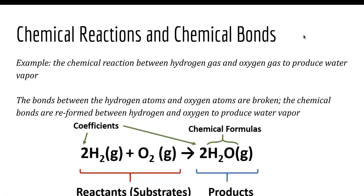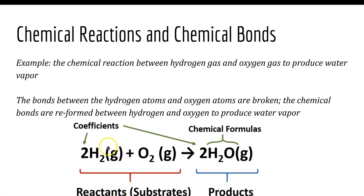For example, a chemical reaction occurs between hydrogen gas and oxygen gas to produce water vapor. The reactants are hydrogen gas and oxygen gas. In order to produce water, the bonds between the hydrogen atoms and oxygen atoms are broken and reformed. Hydrogen gas is two hydrogens bonded together, and oxygen gas is two oxygen atoms bonded together. Those bonds are broken and reformed to produce a new product. The properties of the reactants are very different from the properties of the products — water is very different from hydrogen gas and oxygen gas.